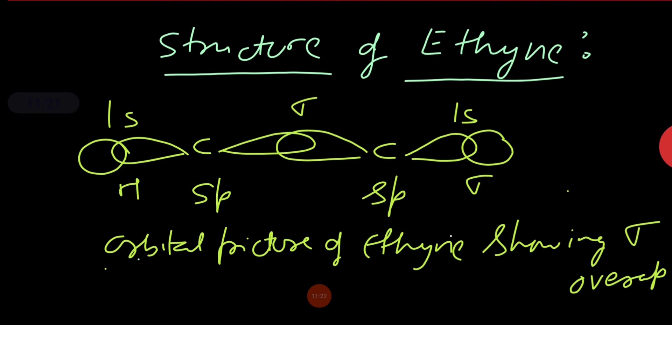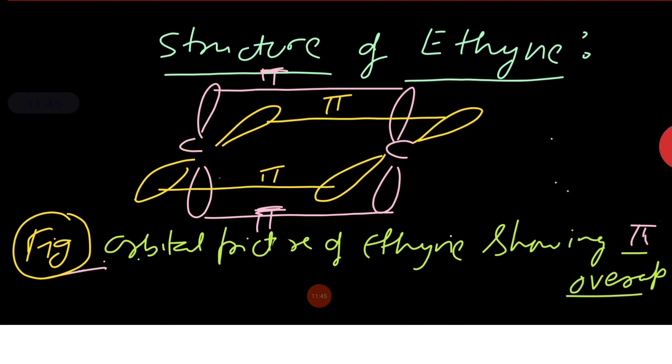Structure of alkyne. This orbital picture shows ethyne with sigma overlap. Carbon-carbon sigma bond is obtained by head-on overlapping of two sp hybridized orbitals of two carbon atoms.